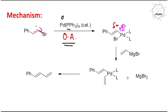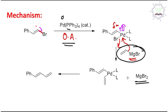In the second step, the vinyl magnesium bromide acts as a nucleophile. Magnesium is highly electropositive, making the carbon nucleophilic. This carbon attacks the palladium center, and Br⁻ leaves. The Grignard reagent produces MgBr₂ as a byproduct. Now both vinyl carbon atoms are attached to palladium, which is still in the +2 oxidation state.